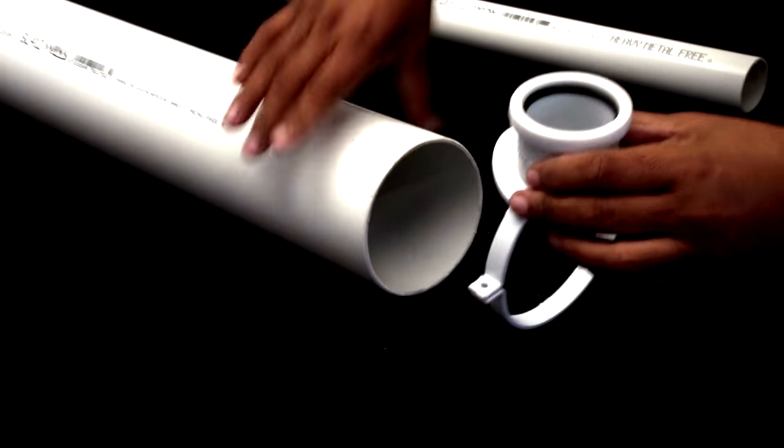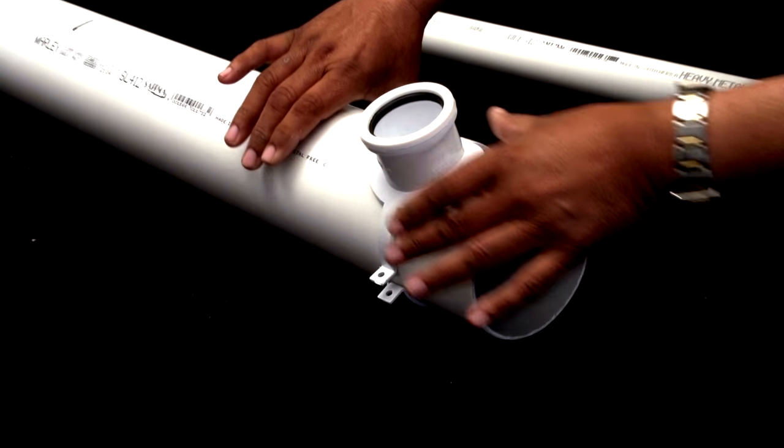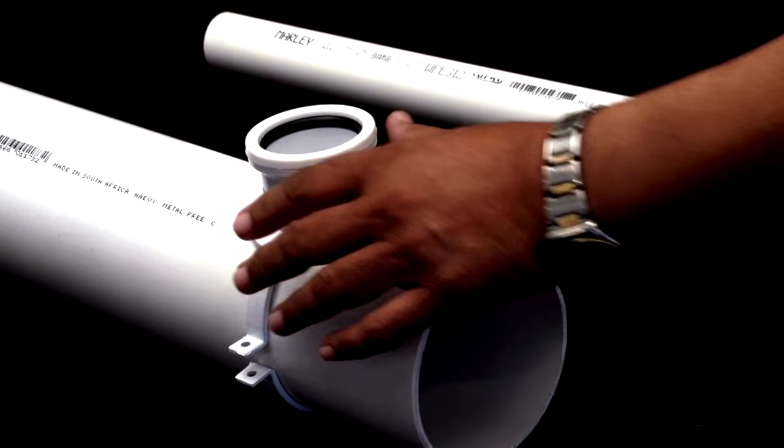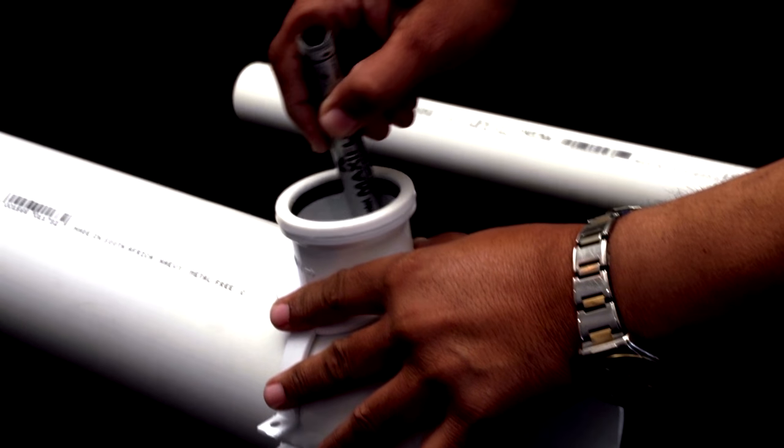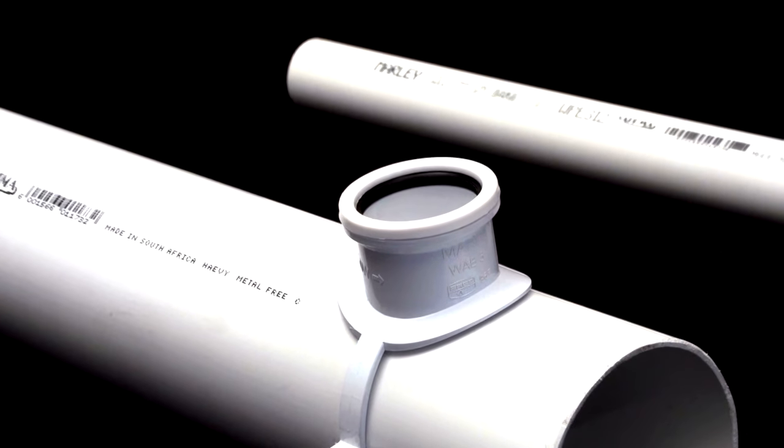Place the saddle over the pipe so that the flow direction markings on the fitting correspond to the actual direction of flow on the main line. Align the saddle into the correct position and mark the saddle flange outline and the required hole in the main line.